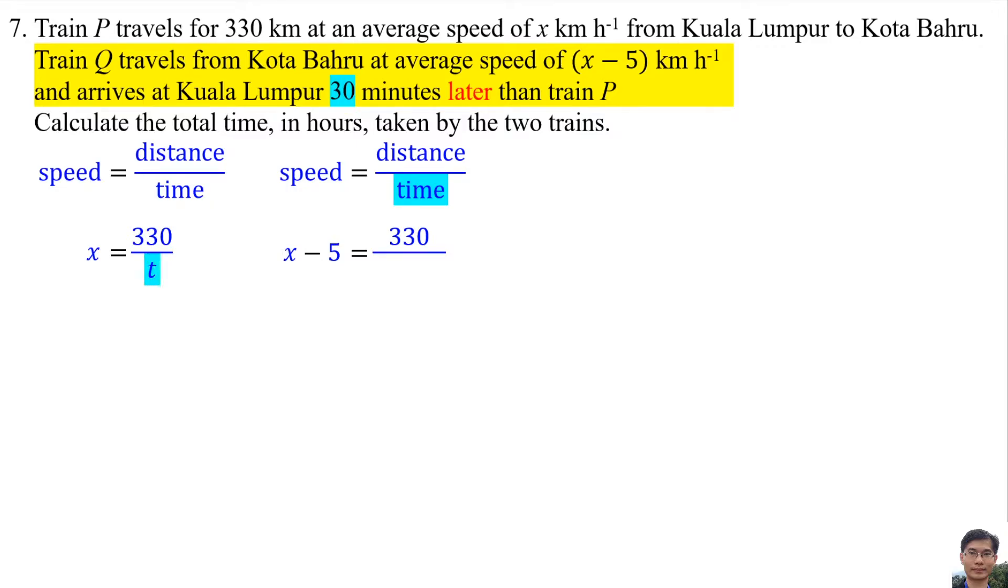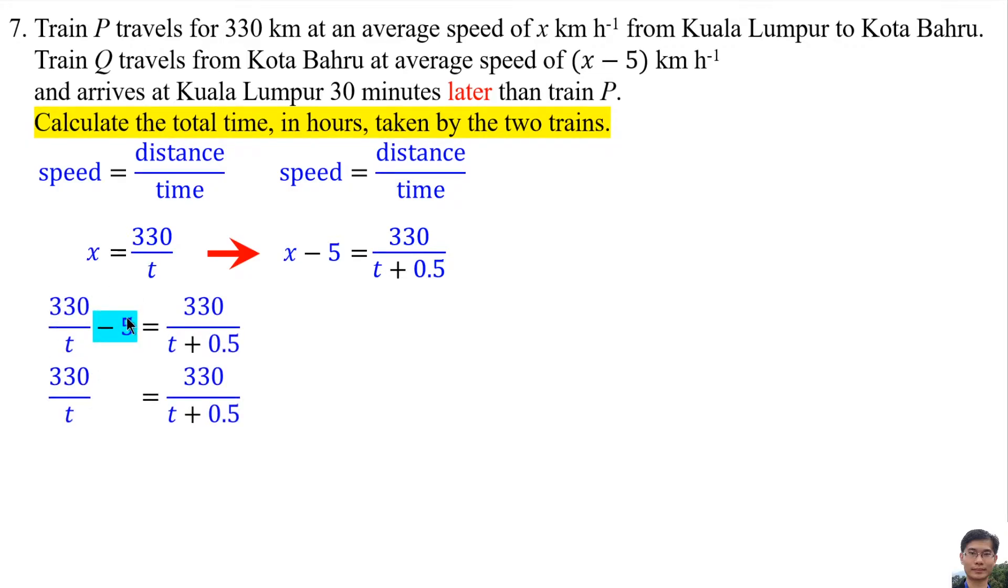It means T plus 0.5 hour. Calculate the total time in hours taken by the two trains. Solve this simultaneous equation. Substitute this equation into this equation. Negative 5 equals negative 5 over 1. After that, time T for both denominator and numerator, so that both terms have the same denominator, that is T.